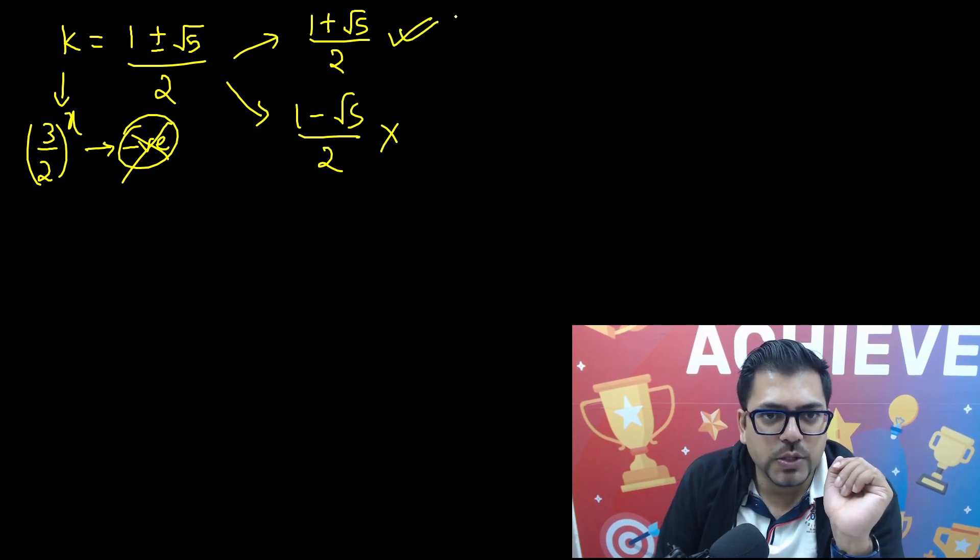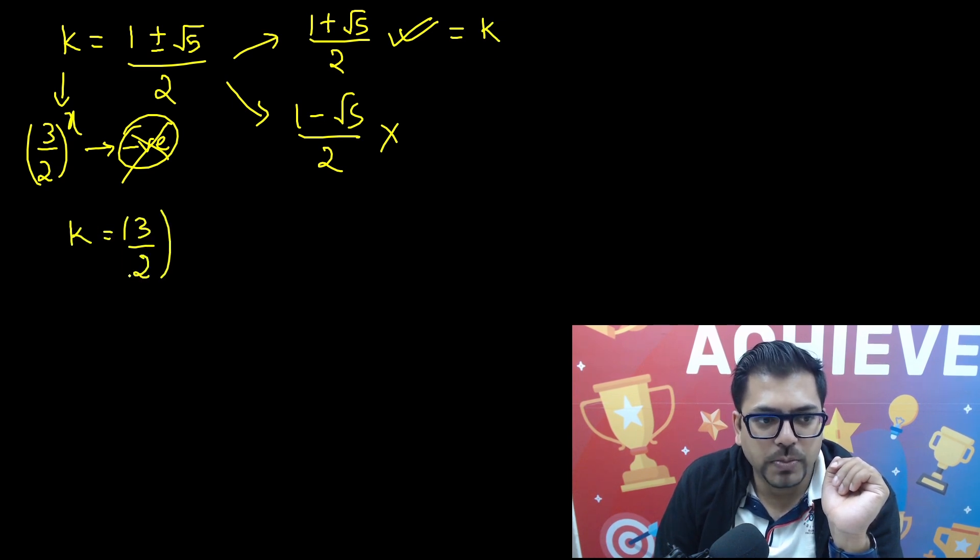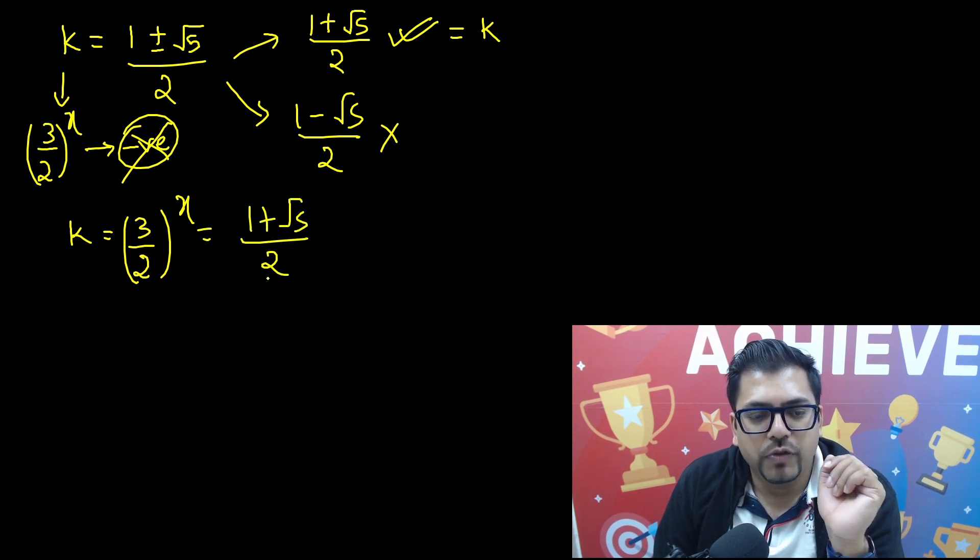So hence this will be the possible value, and now this becomes 1 plus root 5 divided by 2 will become equals to k. So k is equals to 3 upon 2 whole raised to power x equals to 1 plus root 5 divided by 2.